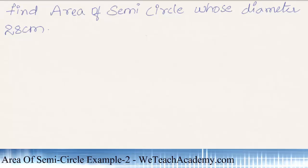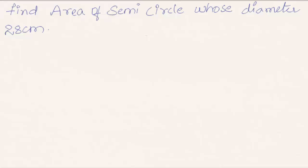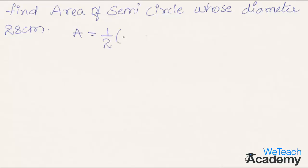Welcome to vdhacademy.com. In this presentation we are going to discuss an example on area of semicircle. The given example is: find the area of a semicircle whose diameter is 28 centimeters. We already know the formula of area of semicircle, which is given by 1/2 × π × r².